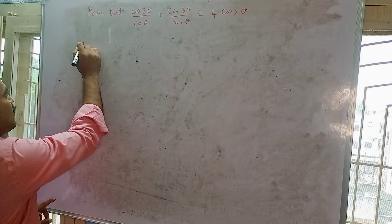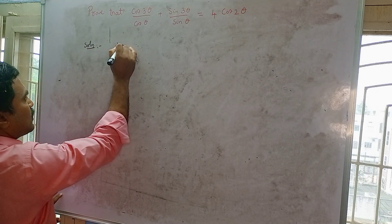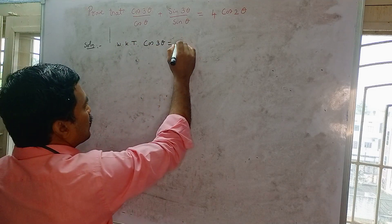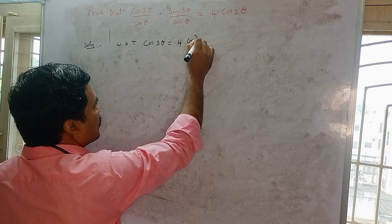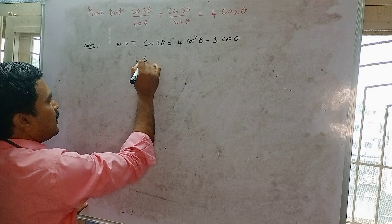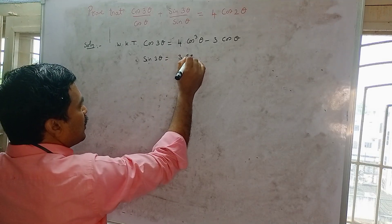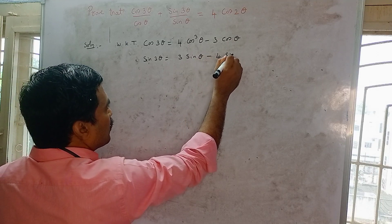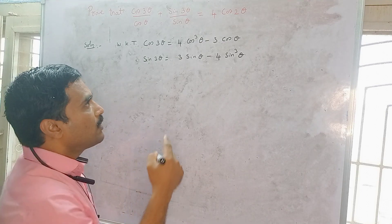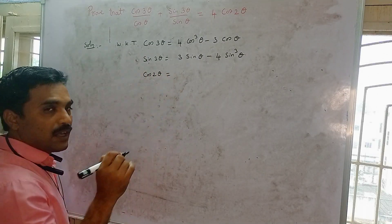First we are going to write all three formulas. In the solution, we know that cos 3θ = 4cos³θ − 3cosθ, and sin 3θ = 3sinθ − 4sin³θ. The third formula involves cos 2θ, which is a multiple angle of 2θ.